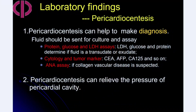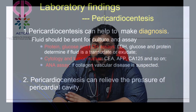Pericardiocentesis helps differentiate whether fluid is exudative or transudative. The fluid, obtained under ultrasound guidance, should be sent for protein, glucose, and LDH assays to determine if it is a transudate or exudate. Cytology and tumor markers — CEA, AFP, CA-125 — are used to look for malignancy. ANA assay is ordered if collagen vascular disease such as SLE is suspected. Pericardiocentesis is also therapeutic — it relieves pericardial cavity pressure, increasing stroke volume and cardiac output.